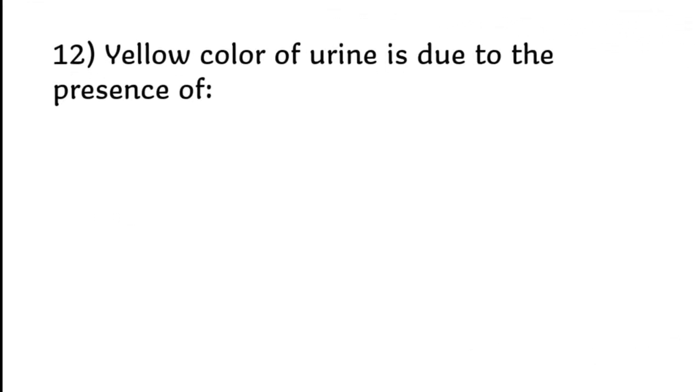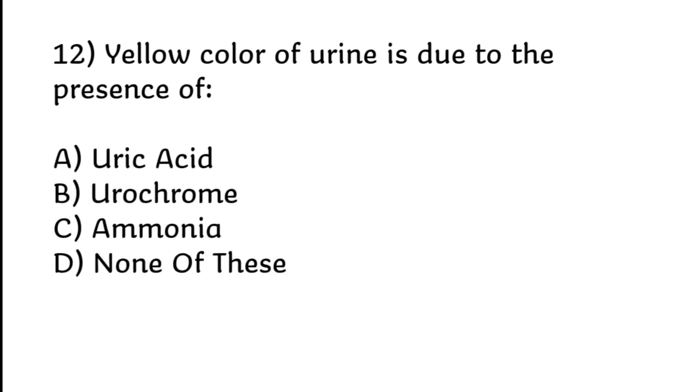Yellow color of urine is due to the presence of uric acid, urochrome, ammonia, or none of these. Correct answer is option B, urochrome.